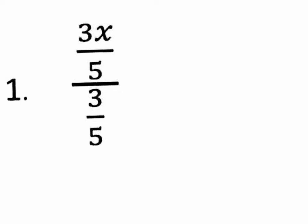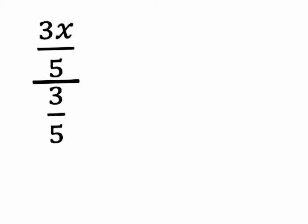This is a fraction divided by a fraction, and it looks complicated. So why not write it horizontally instead of vertically? I'm going to write it sideways instead of up and down. There's my 3x minus 5. Instead of writing it as a fraction, I'm going to write it with a division symbol like this, divided by the bottom one, which is 3 fifths.